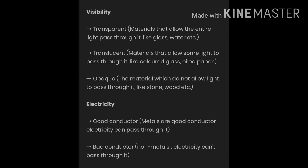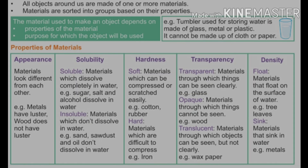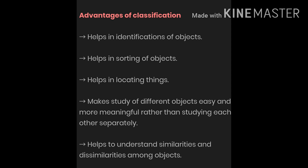Based on today's revision, we have a summary table of different physical properties. According to appearance, substances can be lustrous or non-lustrous. Based on solubility, they can be classified as soluble, insoluble, miscible, or immiscible. Depending on hardness, substances can be soft or hard. According to transparency or visibility, they can be transparent, translucent, or opaque. Based on density, substances can float or sink in water.